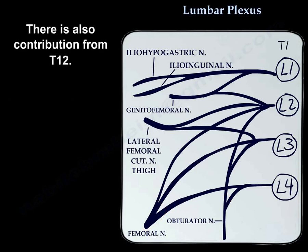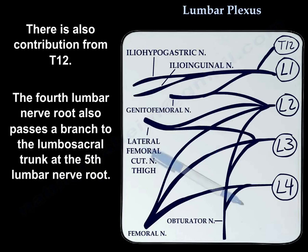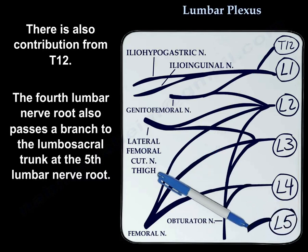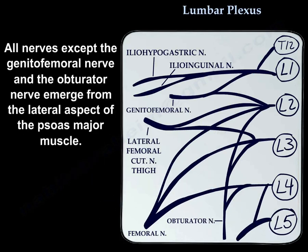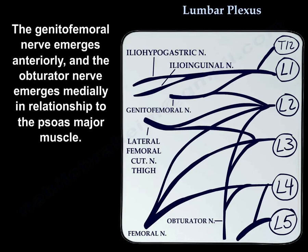There is also contribution from T12. The fourth lumbar nerve root passes a branch to the lumbosacral trunk at the fifth lumbar nerve root. All nerves except the genitofemoral and the obturator emerge from the lateral aspect of the psoas major muscle. The genitofemoral emerges anteriorly, and the obturator emerges medially in relationship to the psoas major muscle.